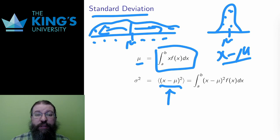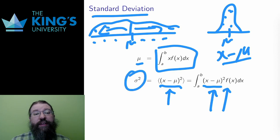Since this is an expectation value, it is calculated by multiplying the distribution by x minus the mean squared. This is labeled sigma squared, and the standard deviation is defined to be the square root of this integral, and it is labeled sigma.